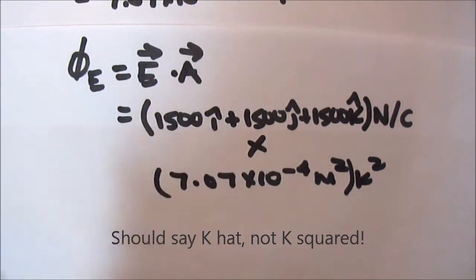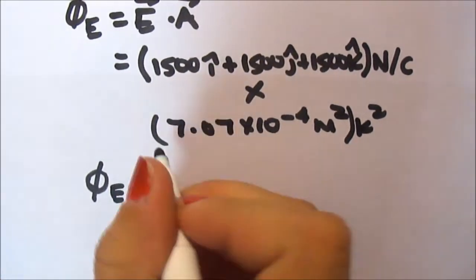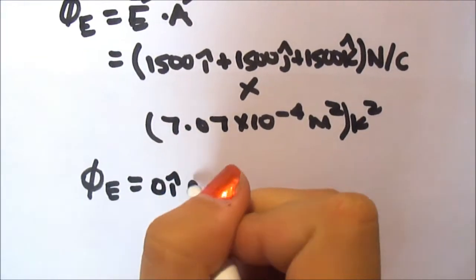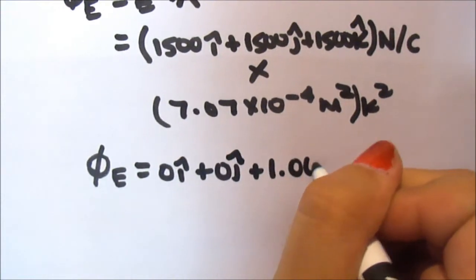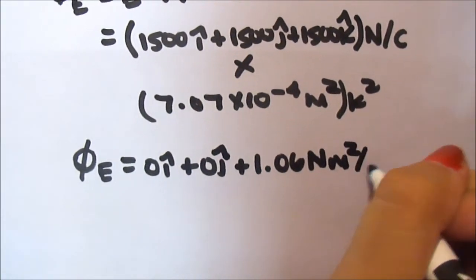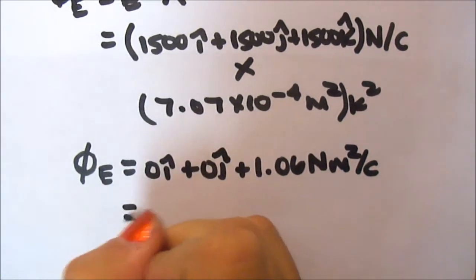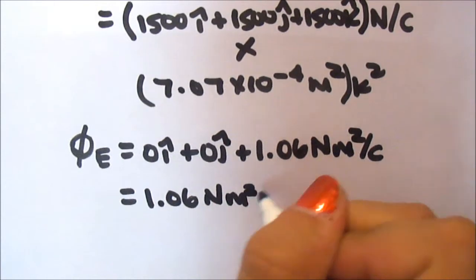And when you distribute that out, you should get an electric flux value of 0i plus 0j plus 1.06 newton meters squared per Coulomb, or just 1.06 newton meters squared per Coulomb.